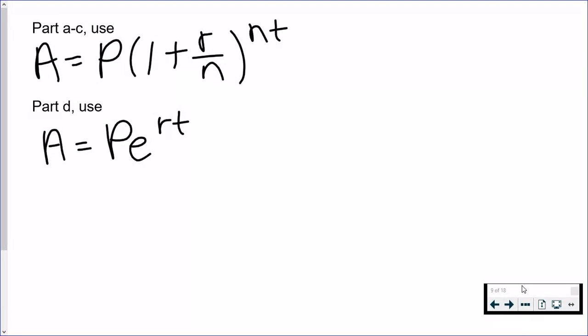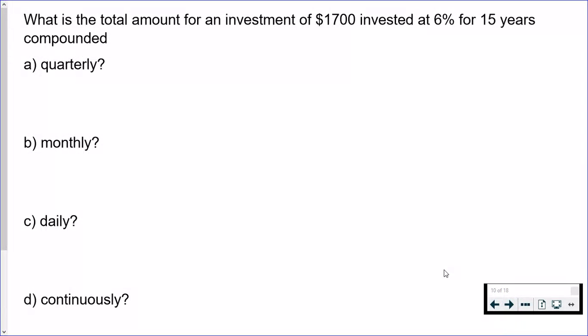which I will refer to as the PERT formula. It contains the constant e. So again, here's the problem: I start with $1,700, so that's going to be P. The rate is 6%, that's going to be r, and the